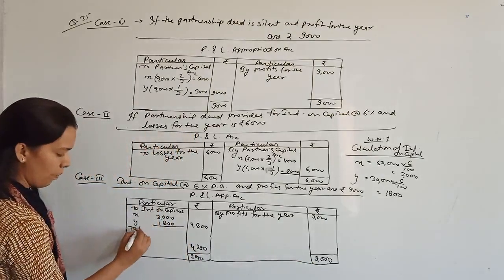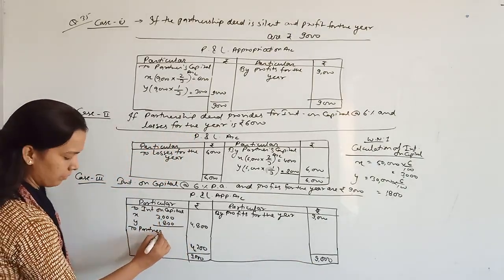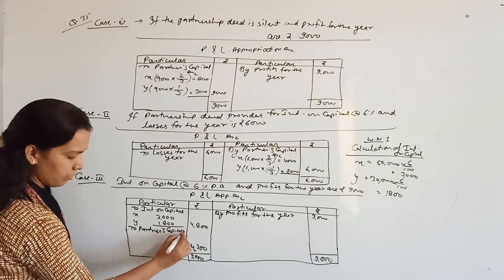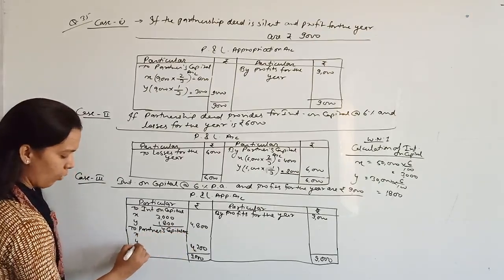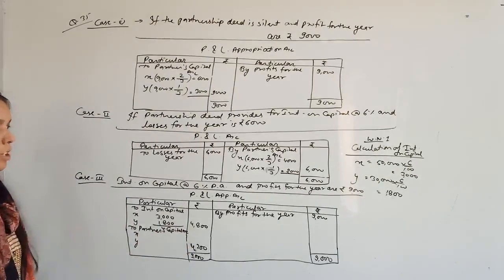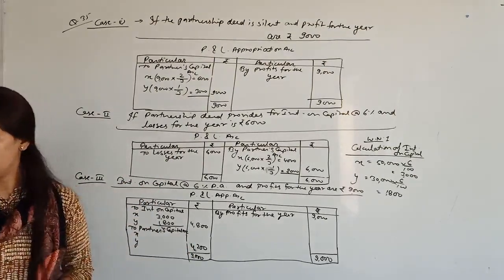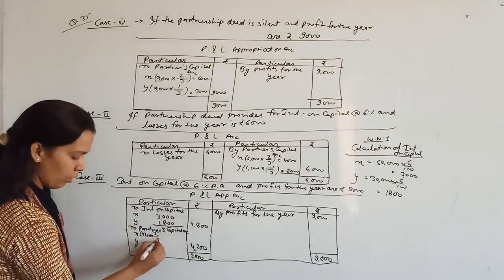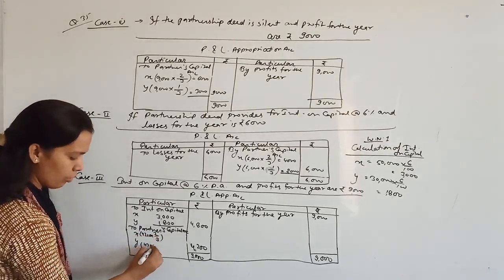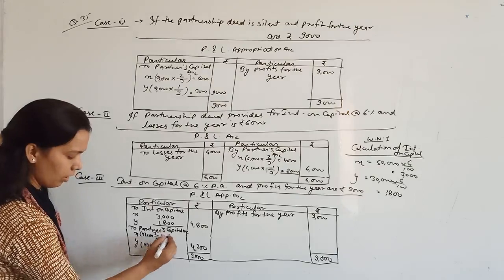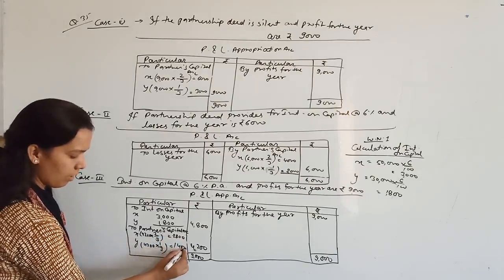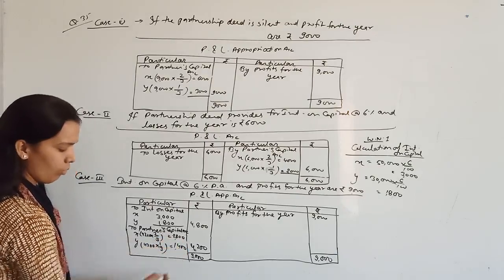After giving interest on capital of 4,800, the remaining profit is 4,200. This 4,200 will be distributed among the partners in their profit sharing ratio of 2:1: 4,200 × 2/3 = 2,800 for X, and 4,200 × 1/3 = 1,400 for Y.